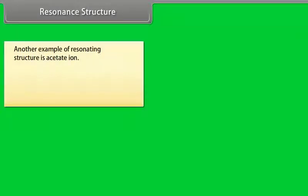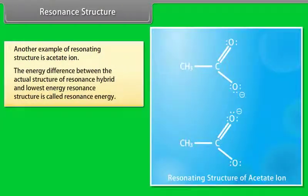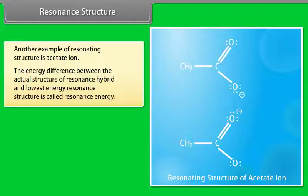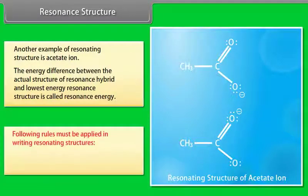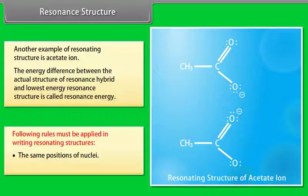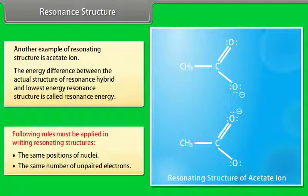Another example of resonating structures is the acetate ion. The energy difference between the actual structure of the resonance hybrid and the lowest energy resonance structure is called resonance energy. The following rules must be applied in writing resonating structures: the same positions of nuclei and the same number of unpaired electrons.